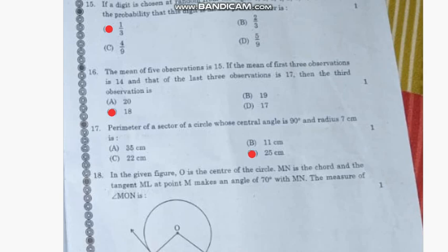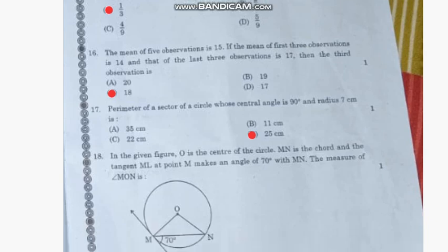Question number 16: The mean of five observations is 15. If the mean of the first two observations is 14 and of the last three observations is 17, then the third observation is—the correct answer is option C, 18.